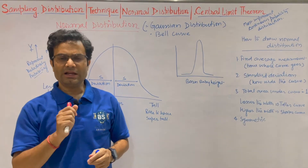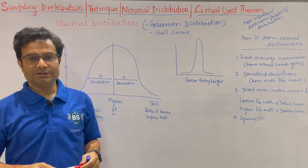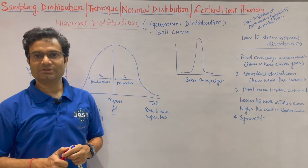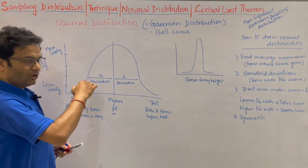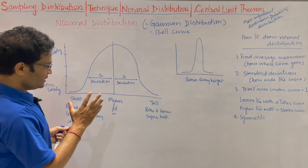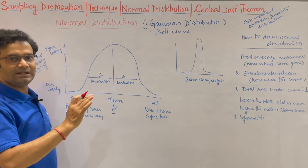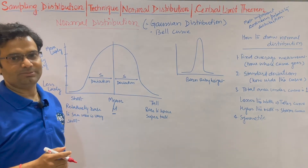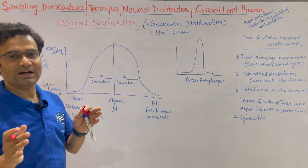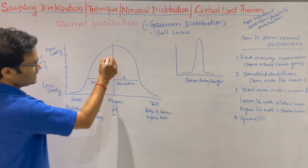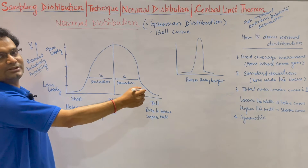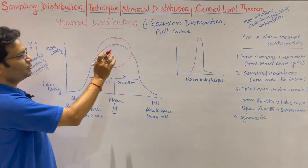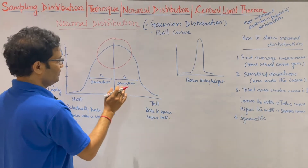If you observe the height of a person in one city or one country, it is fully normally distributed. Height, weight, IQ, marks in university examinations — most natural things are highly normally distributed. In the case of height, most people's height is near the mean. If the average height in a country is 5.5 inches, most people will have a height of 5.5 or near to 5.5. This area is very common because this is the mean height and most people cluster near the mean.